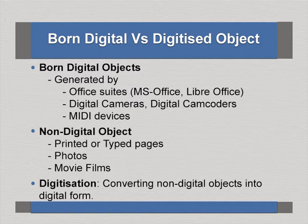Born digital objects are generated by office suites like MS Office, LibreOffice, or OpenOffice. In the case of images, they might have been captured by digital cameras or digital camcorders. Nowadays, even video recording equipment comes with a digital side. MIDI devices are used in the case of musical instruments. Non-digital objects include printed documents — old theses, papers, or journal publications mostly in printed form.